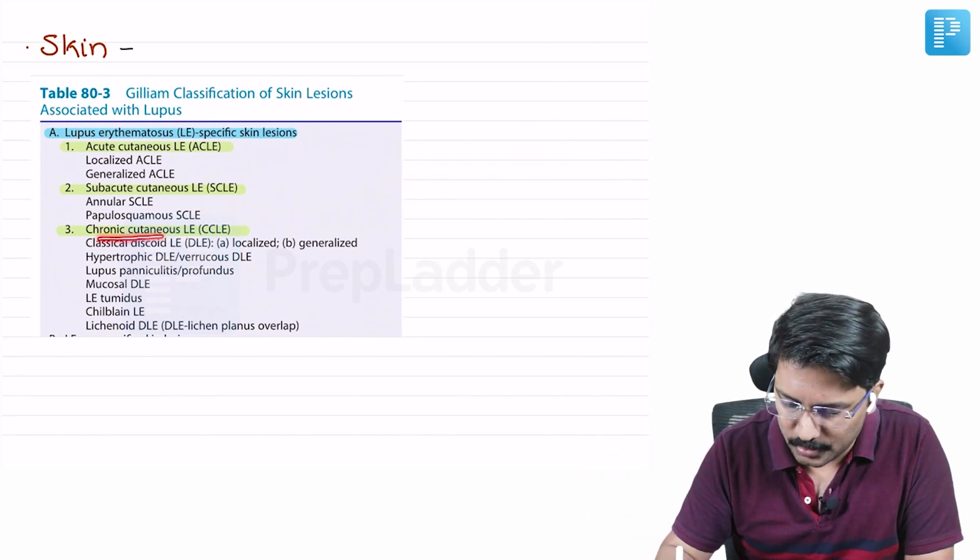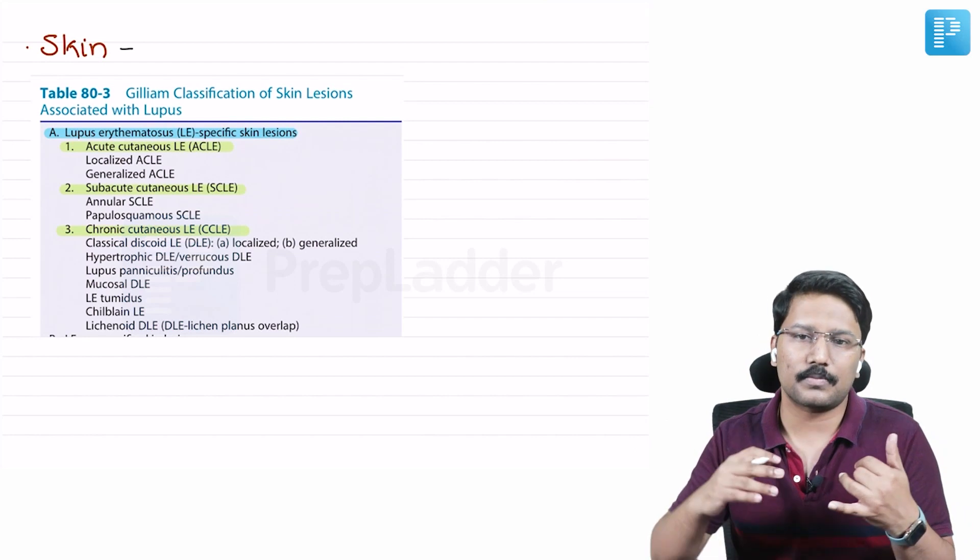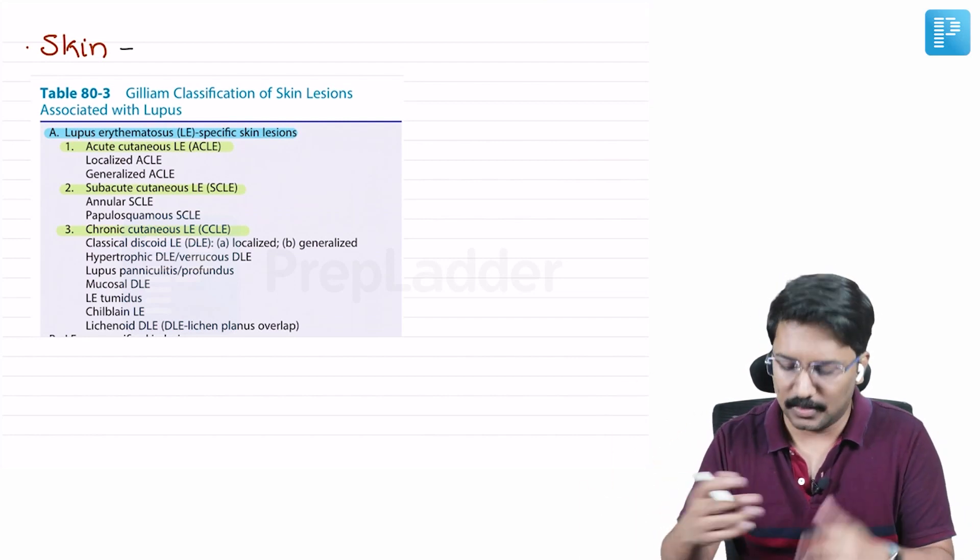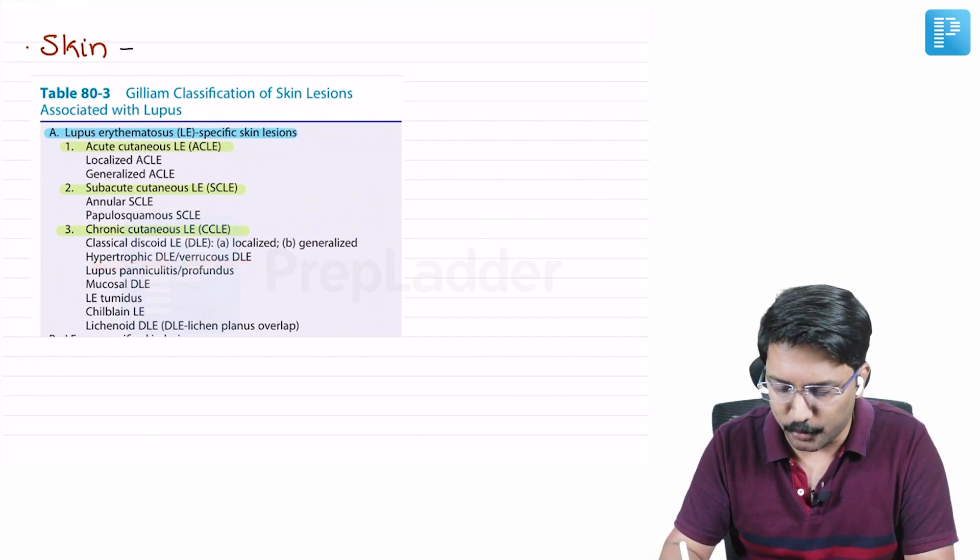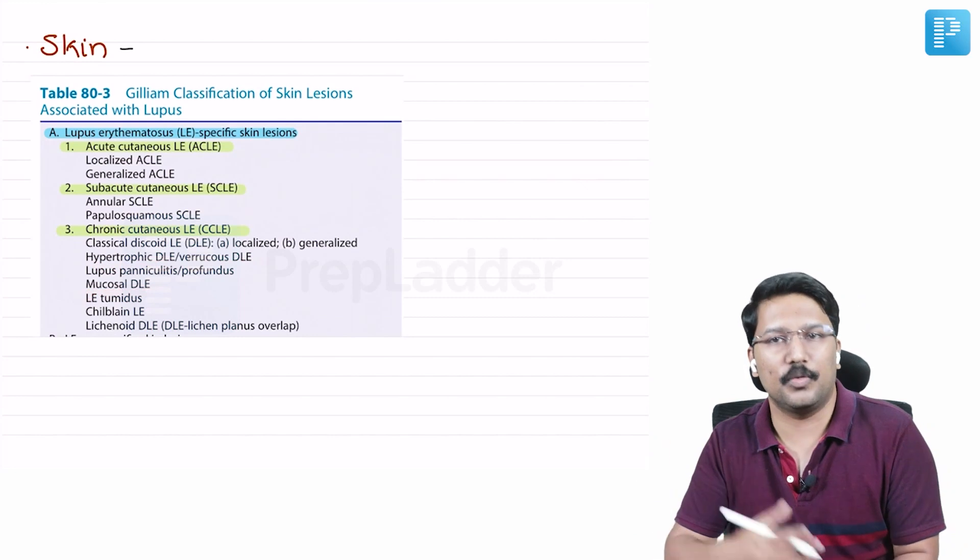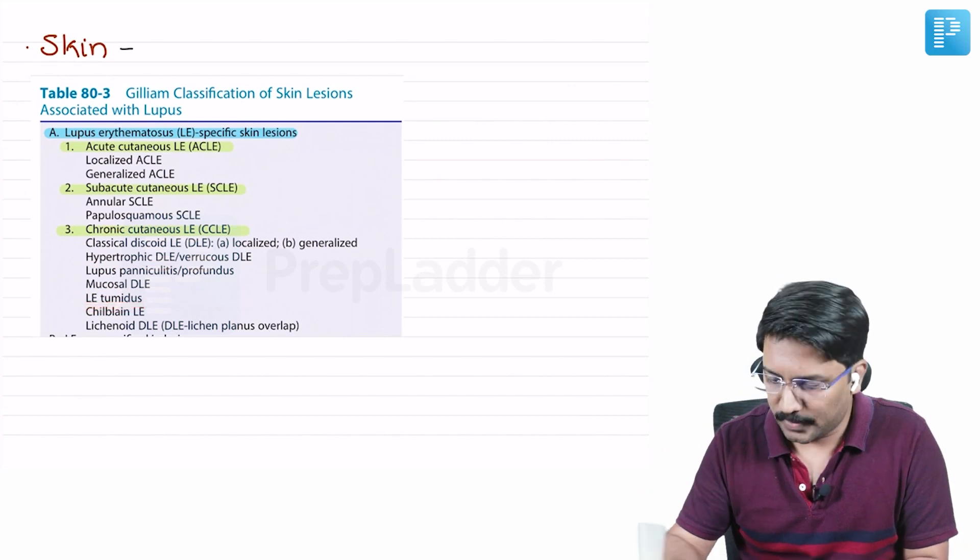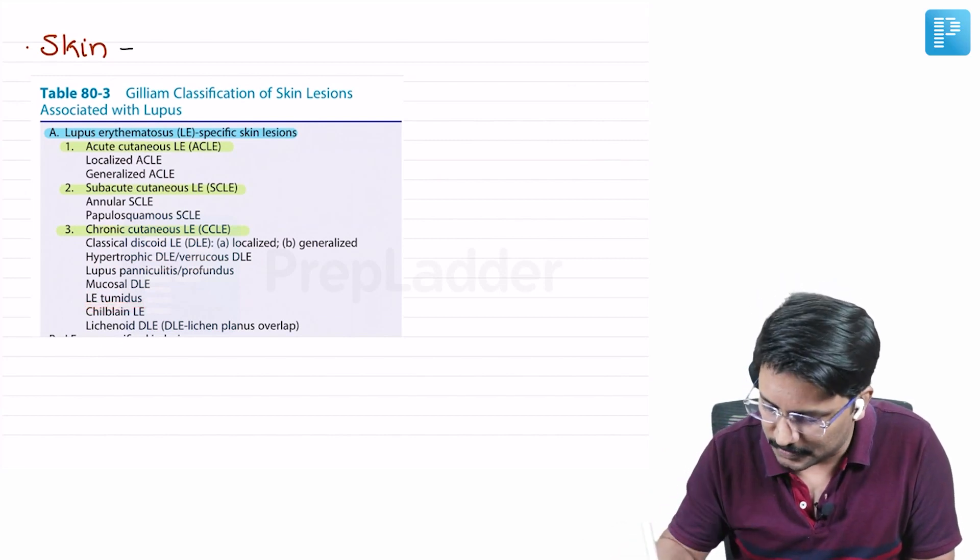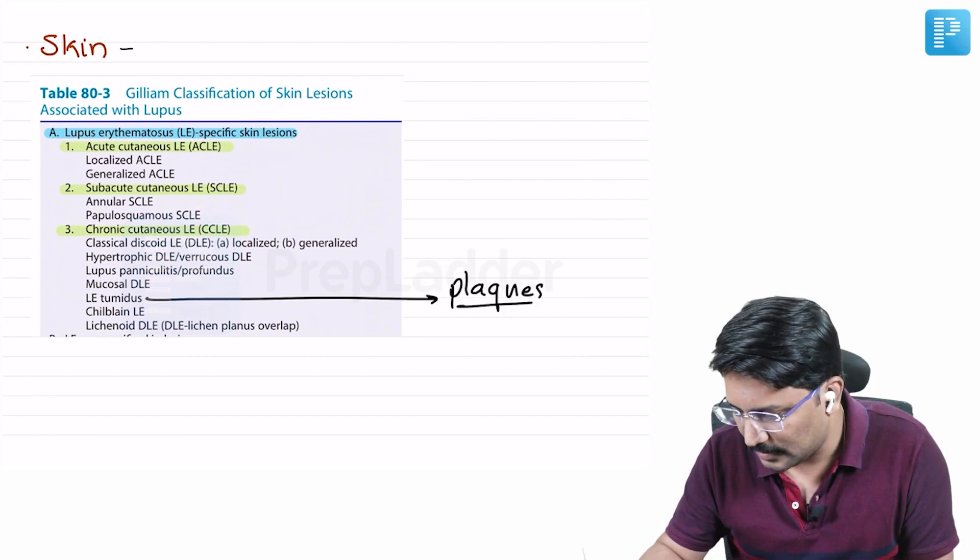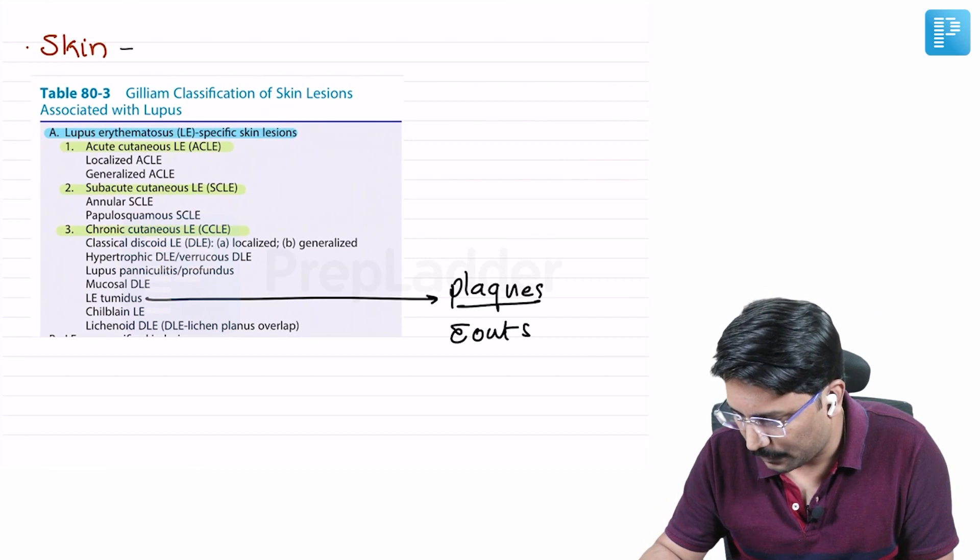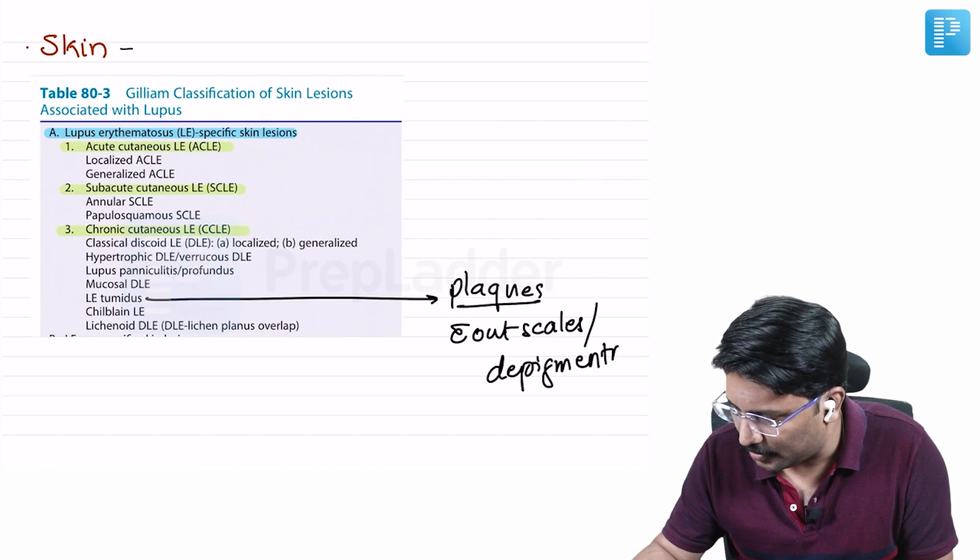Now coming to the third one - that is chronic cutaneous lupus erythematosus. The very classical example we are all familiar with is the discoid lupus erythematosus. Some of its variants can also be considered under this which are specific, like hypertrophic DLE or verrucous DLE. Then mucosal discoid lupus erythematosus, mucosal DLE. Then we have lupus erythematosus tumidus, where there are characteristic lesions which are plaques - erythematous plaques without scales and depigmentation.